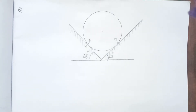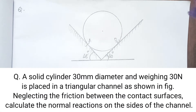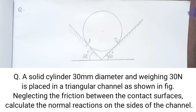First question is: a solid cylinder of 30 mm diameter and weight 30 N is placed in a triangular channel as shown in the figure. Neglecting the friction between the contact surfaces, calculate the normal reaction on the sides of the channel.